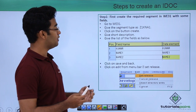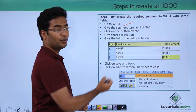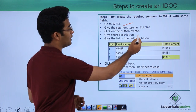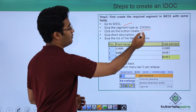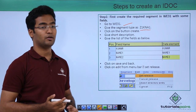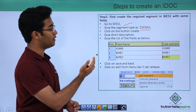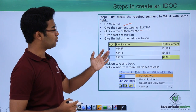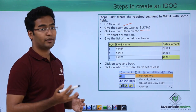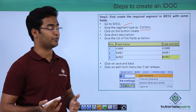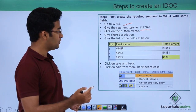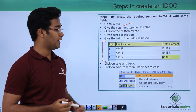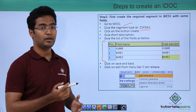For that we have to go to transaction code WE31. Here we have to provide our segment type as Z1KNA1. We have maintained our segment name as Z1KNA1. Then we have to click on the create button and provide a short description. After that we have to provide the field names here.